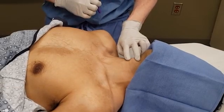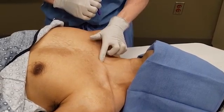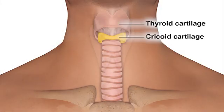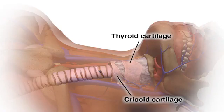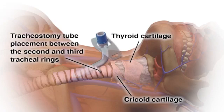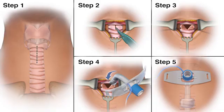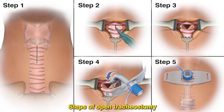Palpate the patient's neck to identify key anatomical landmarks. These include the thyroid cartilage, the cricoid cartilage, and the sternal notch. The ideal location for placement of the tracheostomy tube is between the second and third tracheal rings. Make sure to check for a high-riding innominate artery that may overlie the area of the planned incision. An open tracheostomy should be performed instead of percutaneous tracheostomy if the patient has a high-riding innominate artery.